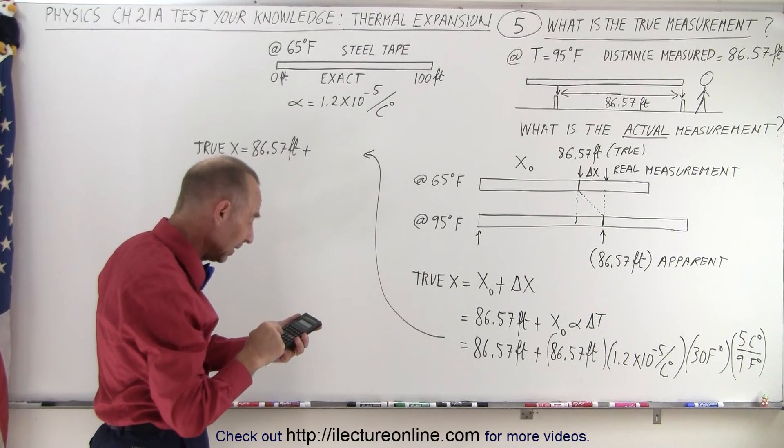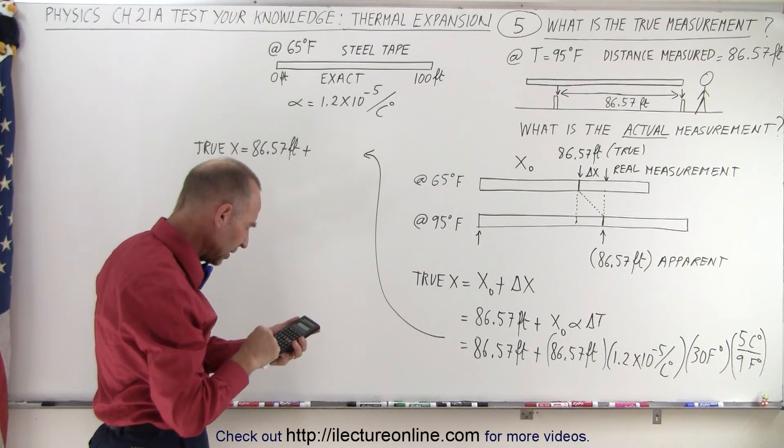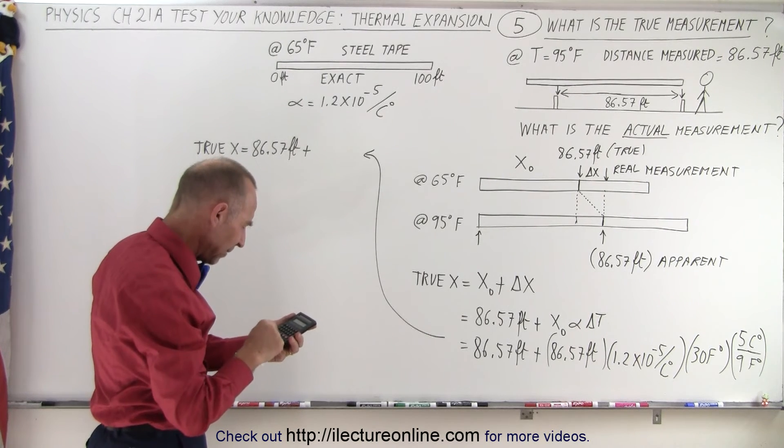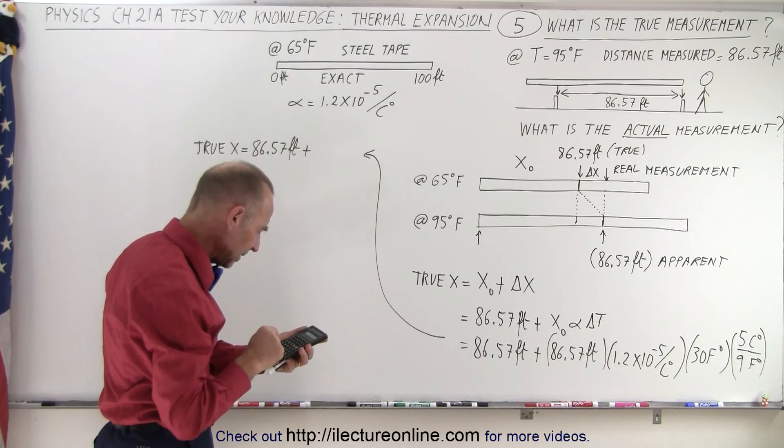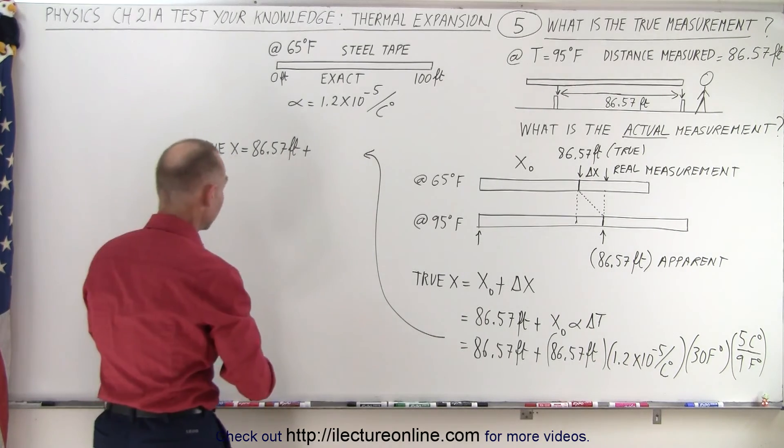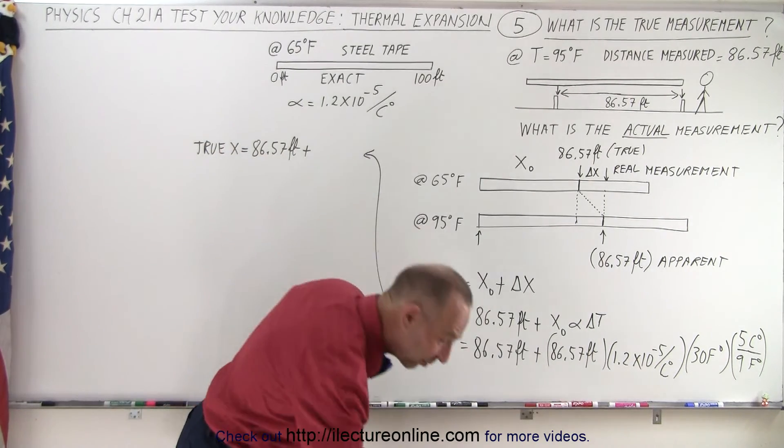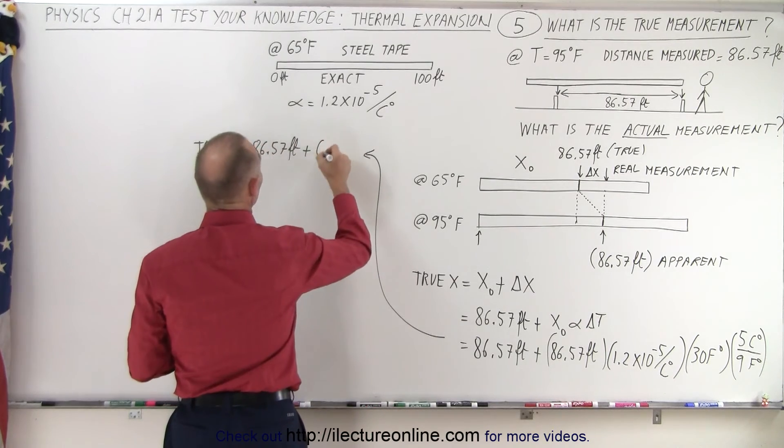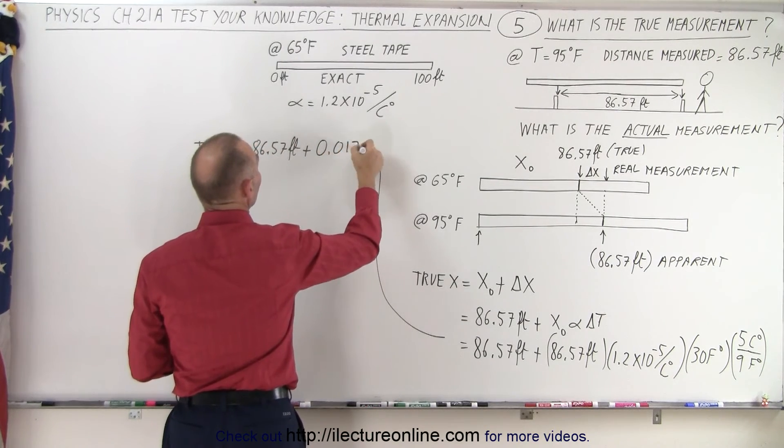86.57 times 1.2 e to the minus 5, times 30, times 5 divided by 9 equals... we get 0.017 feet.